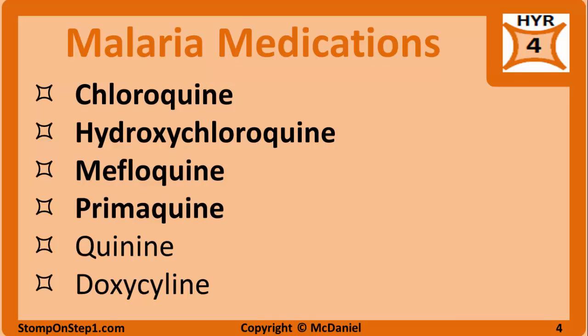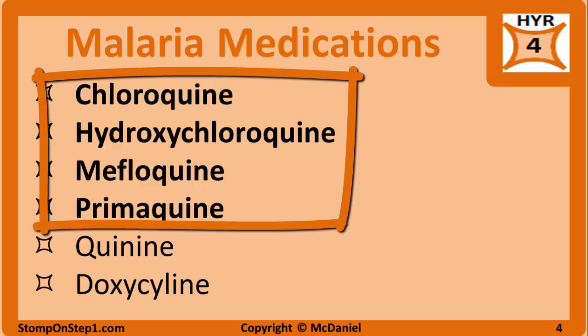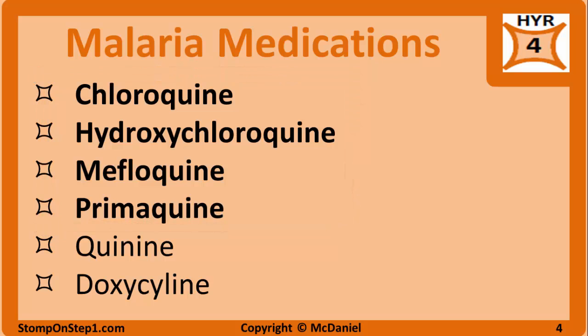Antimalarials are a class of medication that can be used prophylactically to prevent malaria, used to treat identified or suspected malaria, or used to periodically treat populations in endemic areas. The most commonly used antimalarials are chloroquine, hydroxychloroquine, mefloquine, and primaquine. Quinine is primarily used for severe cases of malaria. Doxycycline also has some action against malaria and is most often used for prophylaxis. Most of the antimalarials have 'quin' in the name, which makes them easy to pick out of a list.